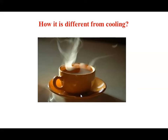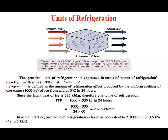In refrigeration, heat flows from lower temperature to higher temperature. Take the reverse example: suppose you have tea at 30 degrees centigrade and the surrounding temperature is about 40 degrees centigrade. To maintain the tea at 30 degrees, you need to continuously extract heat from it. That is called refrigeration. That is the basic difference between refrigeration and cooling.